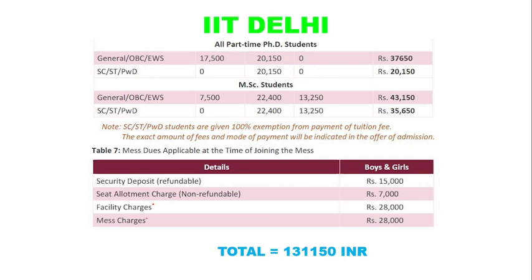I don't know what facilities are included in that ₹28,000 charge — hopefully you'll find out when you join IIT Delhi. The mess charges are also ₹28,000, which is humongous. IIT Kanpur and IIT BHU (Banaras) charge around ₹15,000 for mess, and students there say the food is absolutely fine. So why is IIT Delhi charging around ₹28,000? If you know, please let me know in the comments.